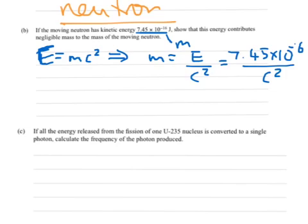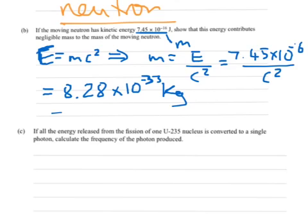Which is 7.45 times 10 to the minus 16 joules, divided by the speed of light squared, and that equals 8.28, okay, that's not the important bit, this is the important bit, times 10 to the minus 33 kilograms. So it's a very, very minuscule amount. So that's the mass that would come from that energy.